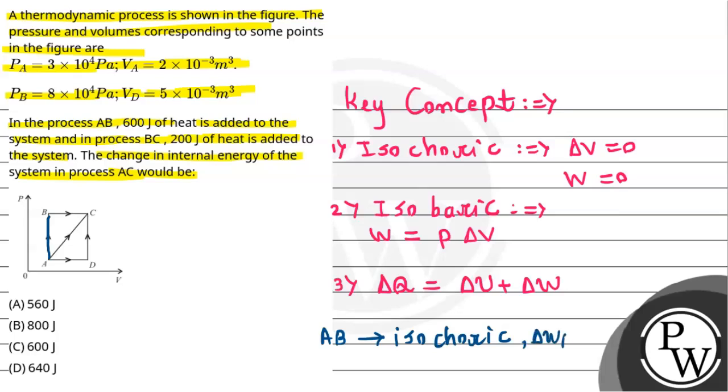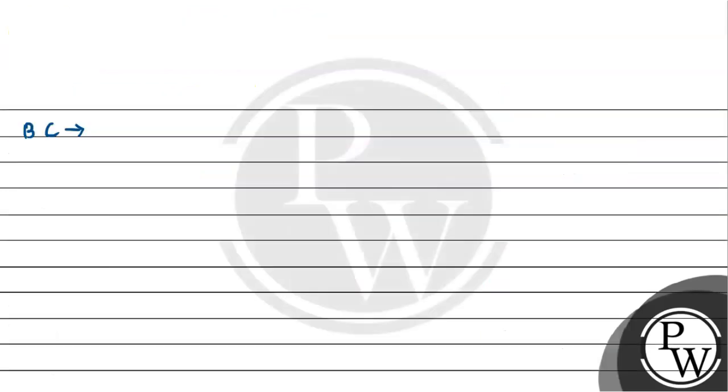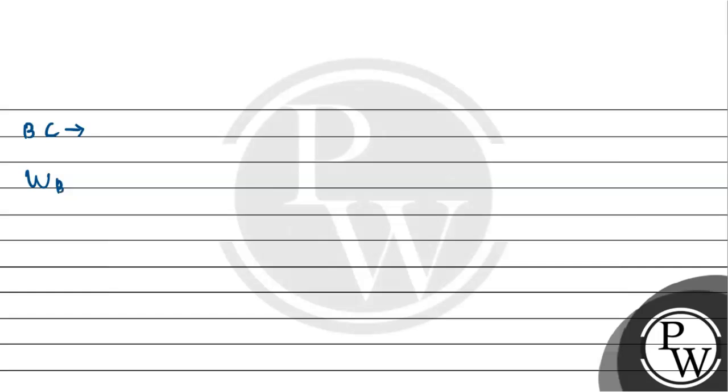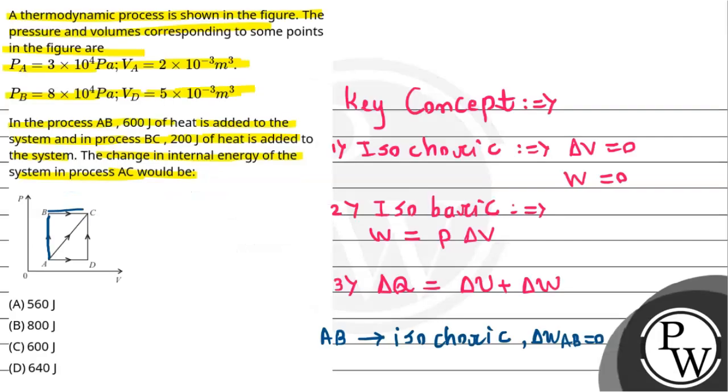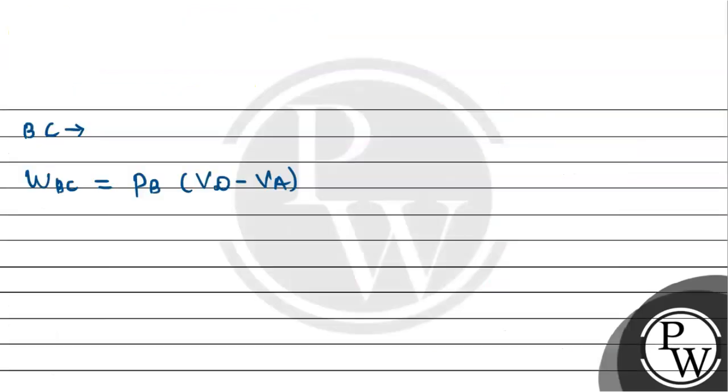In B to C, there is a change in volume. Using the formula, the amount of work done through the process BC can be calculated as pressure times the change in volume, which is Vb minus Va.